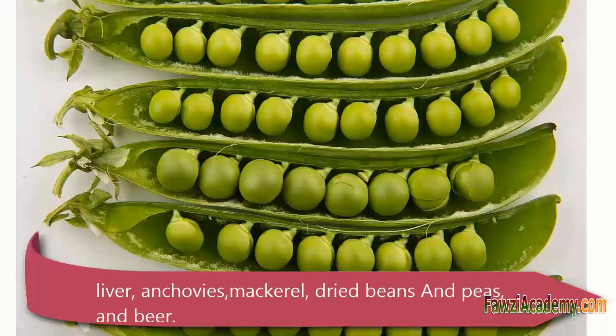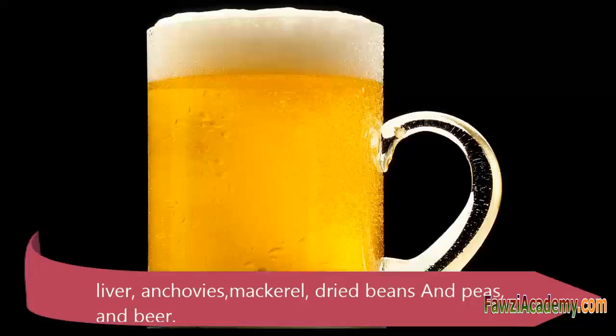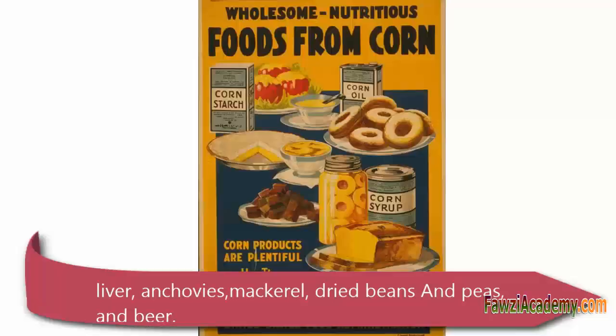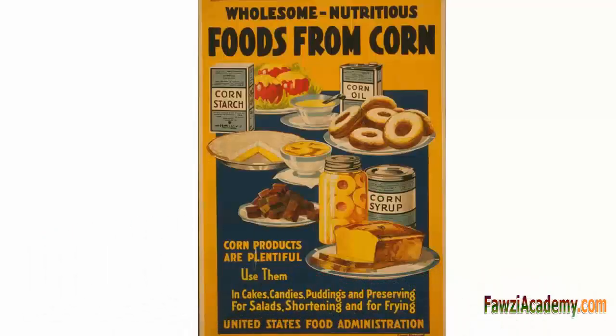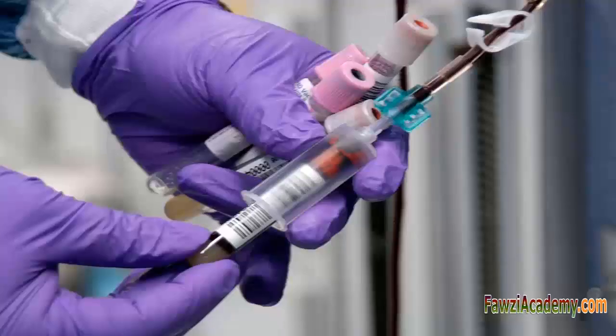Most uric acid dissolves in blood and travels to the kidneys. From there, it passes out through urine. If your body produces too much uric acid or doesn't remove enough of it, you can get sick.